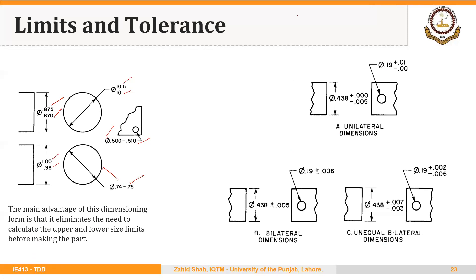Another important concept is MMC and LMC — maximum material condition and least material condition — which directly relates to the limits of size. For an external feature, the maximum material we can have in the part is when it is made to the upper limit of size: 0.443. That is also called maximum material condition. The minimum material will be when the part is made to the lower limit, 0.433, which is called least material condition.